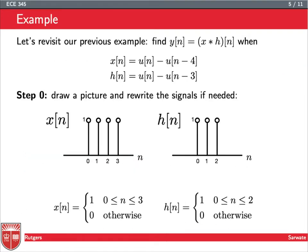Let's revisit our previous example of convolving two boxes. We have a box from 0 to 3, and a box from 0 to 2. We'd like to redo this in the flip and slide method. That means we have to draw things on the k axis, because we're going to be summing h[k]x[n-k].